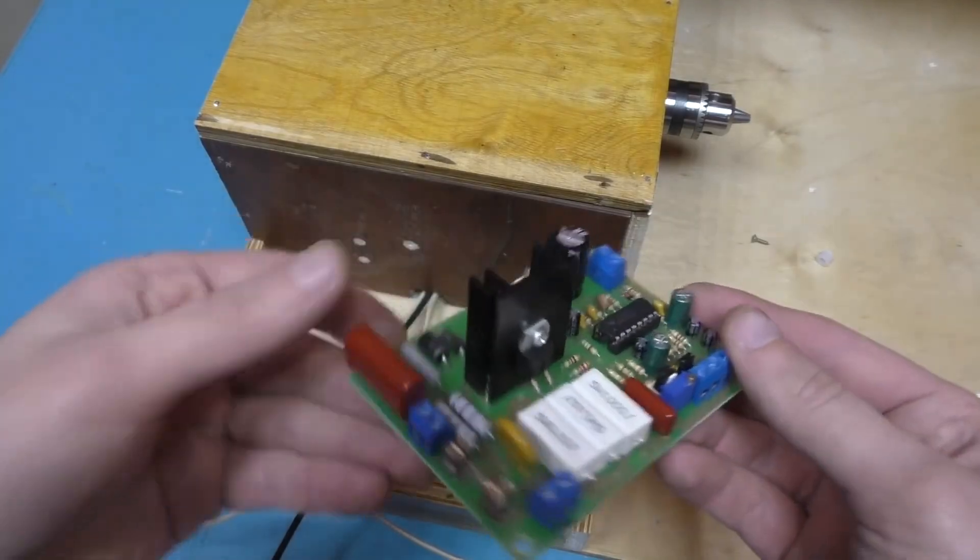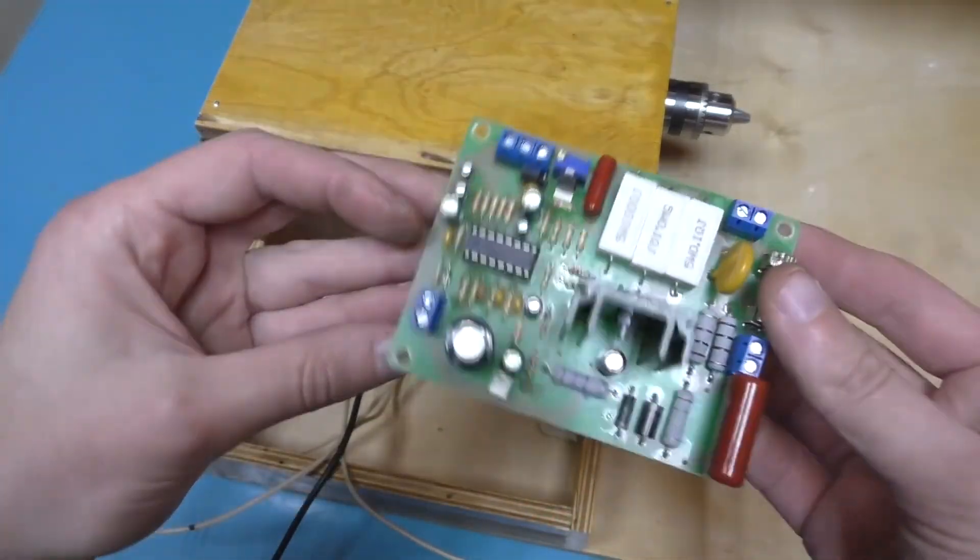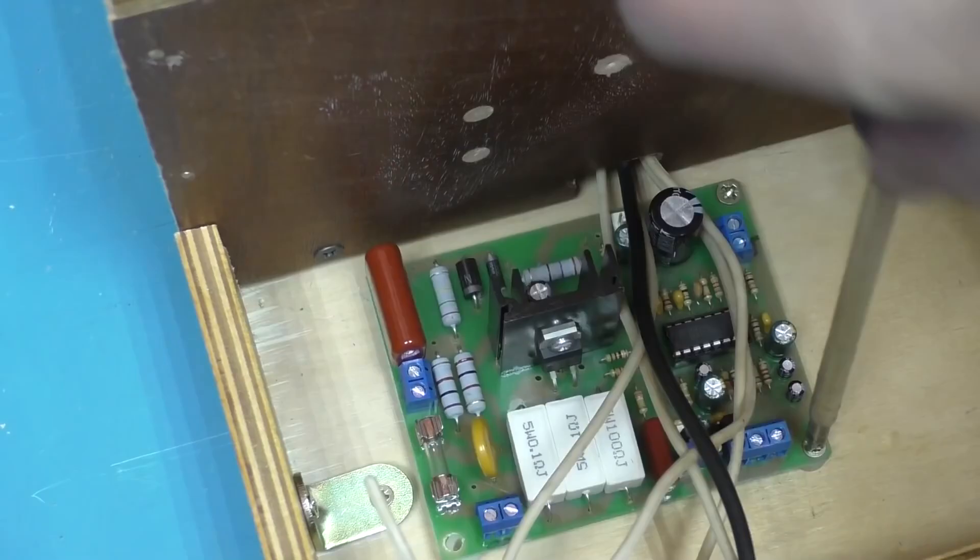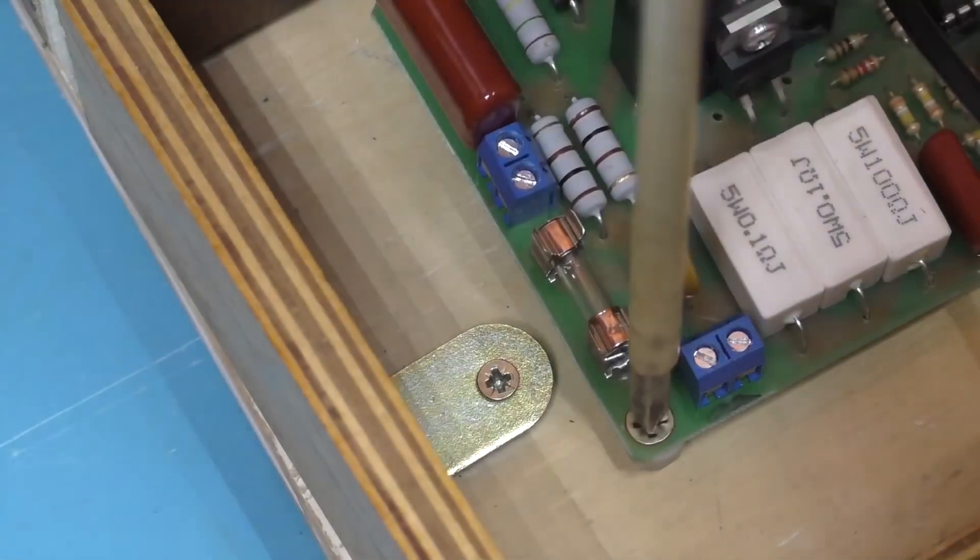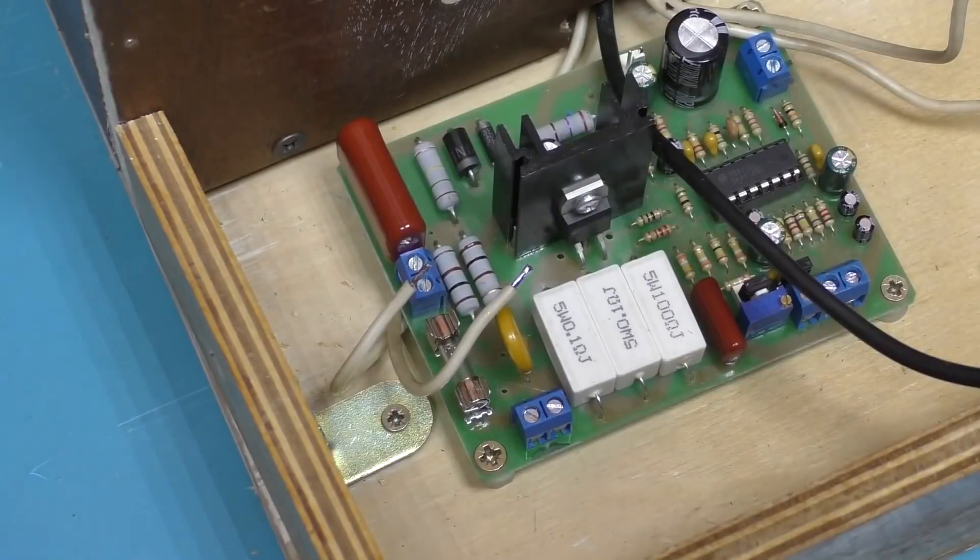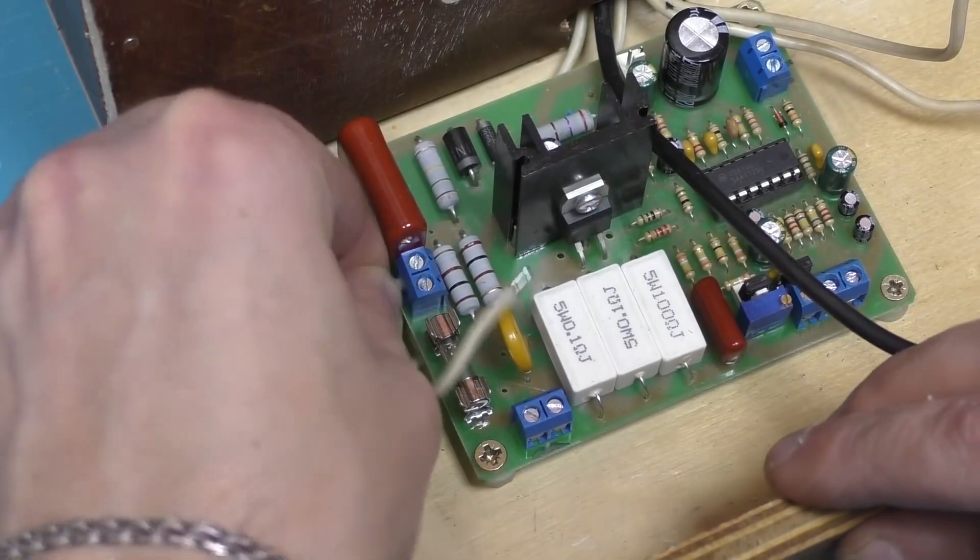And to connect the motor, we'll need a board to control the speed. We fasten the board with self-tapping screws, placing plastic spacers underneath it. Now connect the wires as shown in the diagram.